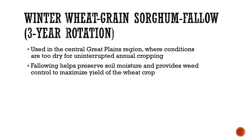A winter wheat, grain sorghum, and fallow rotation is used more in the central Great Plains where it is too dry for uninterrupted annual cropping. Fallow helps preserve soil moisture, controls weeds, and helps maximize the yield of that wheat crop. We've seen especially in 2018 that the wheat price skyrocketed — young farmers in the United States had really never seen it that high. When on a rotation like this, it can be pretty good for your bottom line.